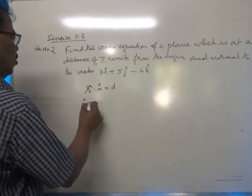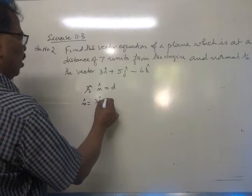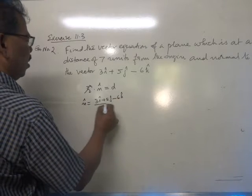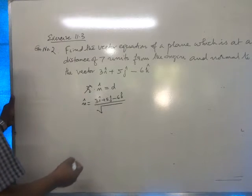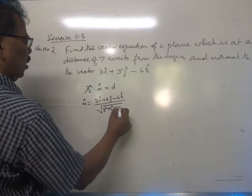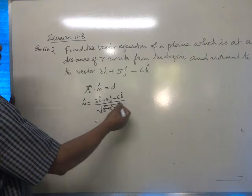n cap is equal to 3i cap plus 5j cap minus 6k cap divided by square root of 3 square plus 5 square plus negative 6 square. That is dividing by the length of the vector.